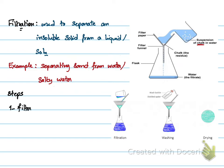For the filter of solid, we are going to take the conical flask, and then add filter paper on a filter funnel. We add it on the neck of the conical flask, and we add the filter paper. The solid particles can't pass through the filter paper. The solid left on the filter paper is called the residue.